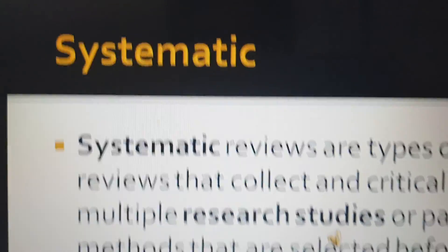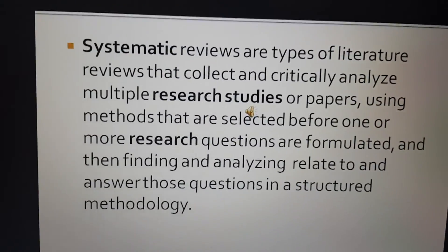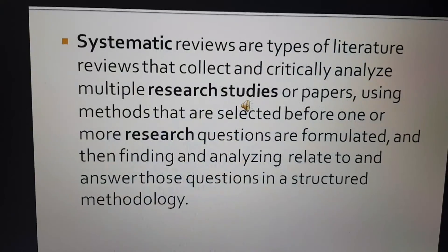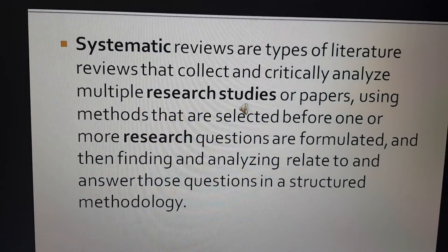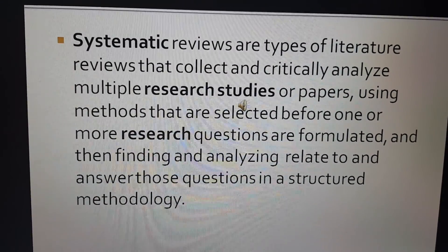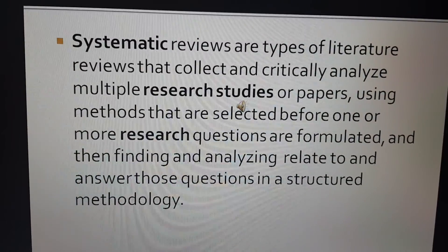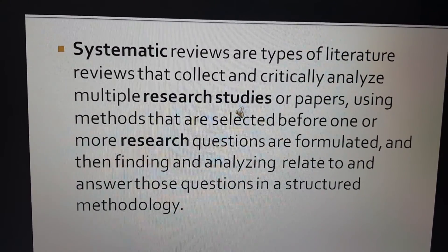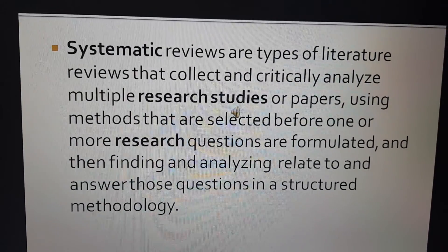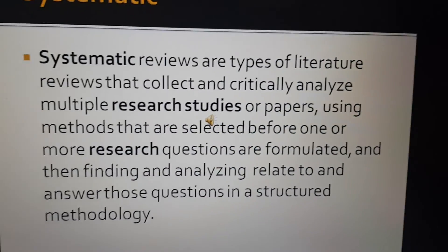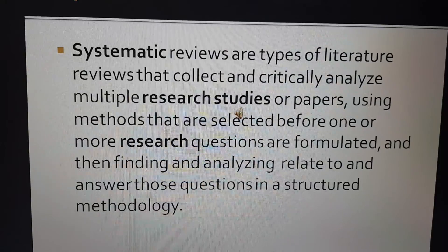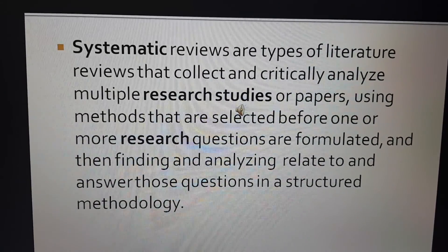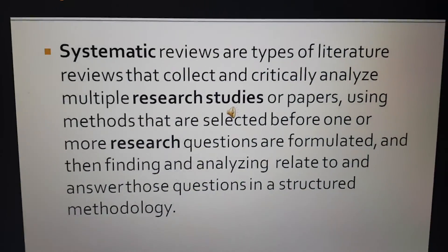Systematic. Systematic reviews are types of literature reviews that collect and critically analyze multiple research studies or papers, using methods that are selected before one or more research questions are formulated, and then finding and analyzing relate to and answer those questions in a structured methodology.